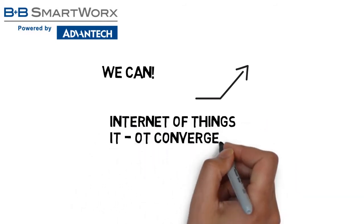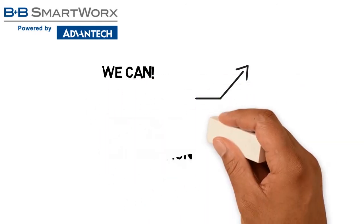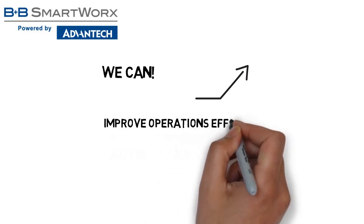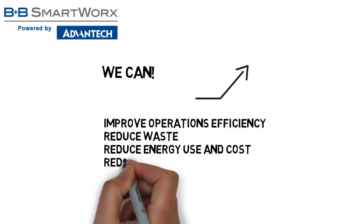Whether you call it the Internet of Things, or IT-OT convergence, or just call it automation, technologies are evolving faster than ever to provide ways to improve efficiency, reduce waste, reduce energy use and cost, and reduce unplanned downtime.